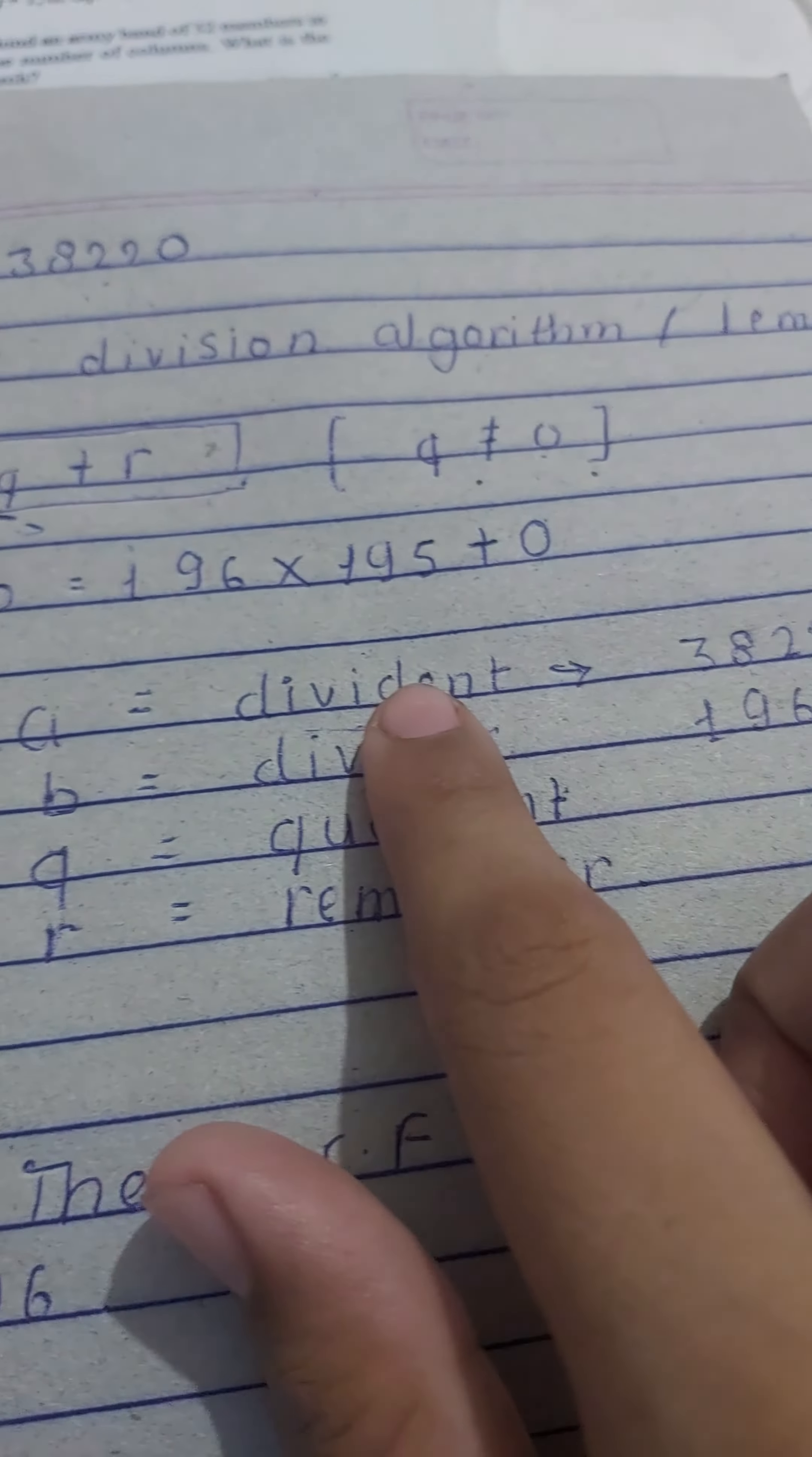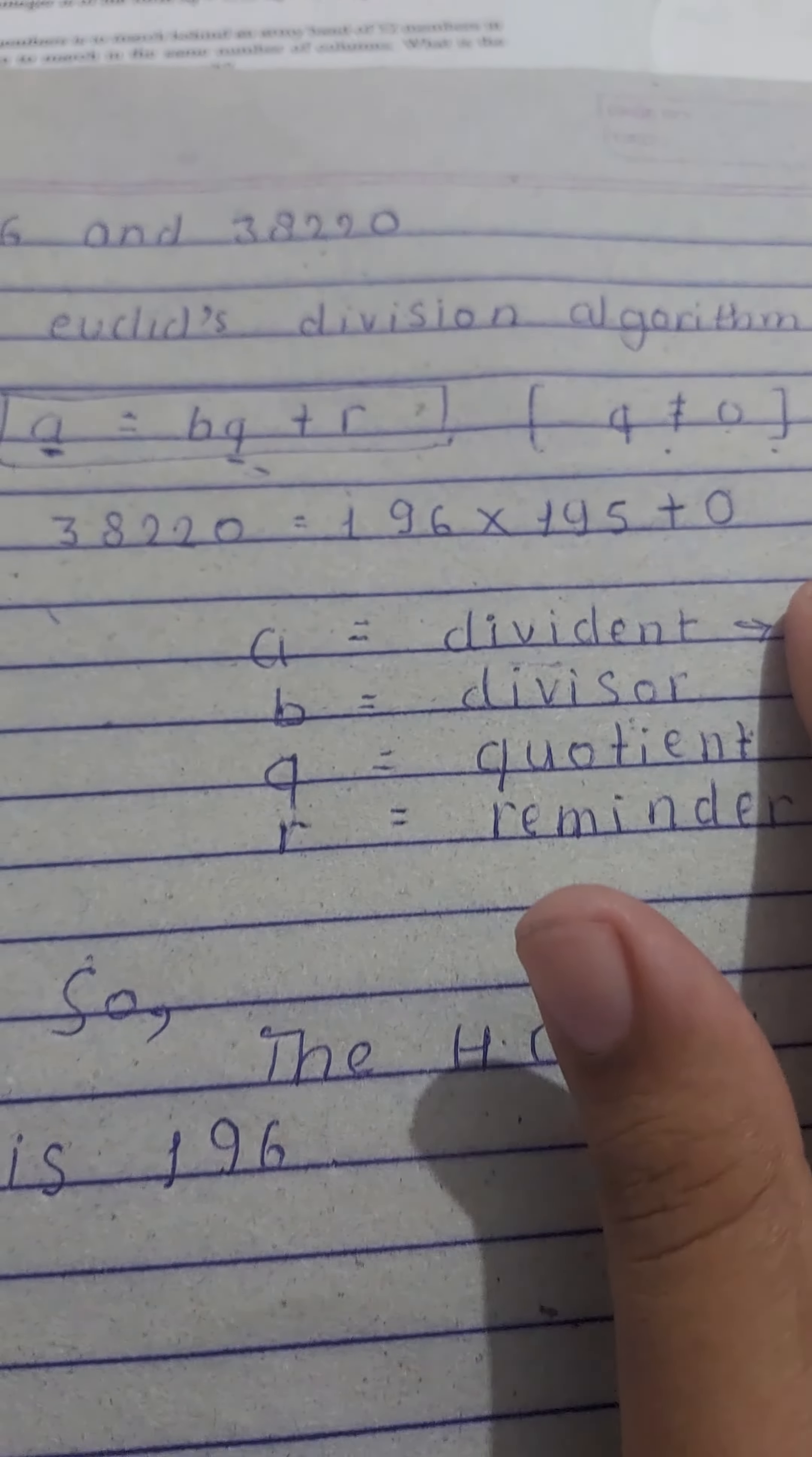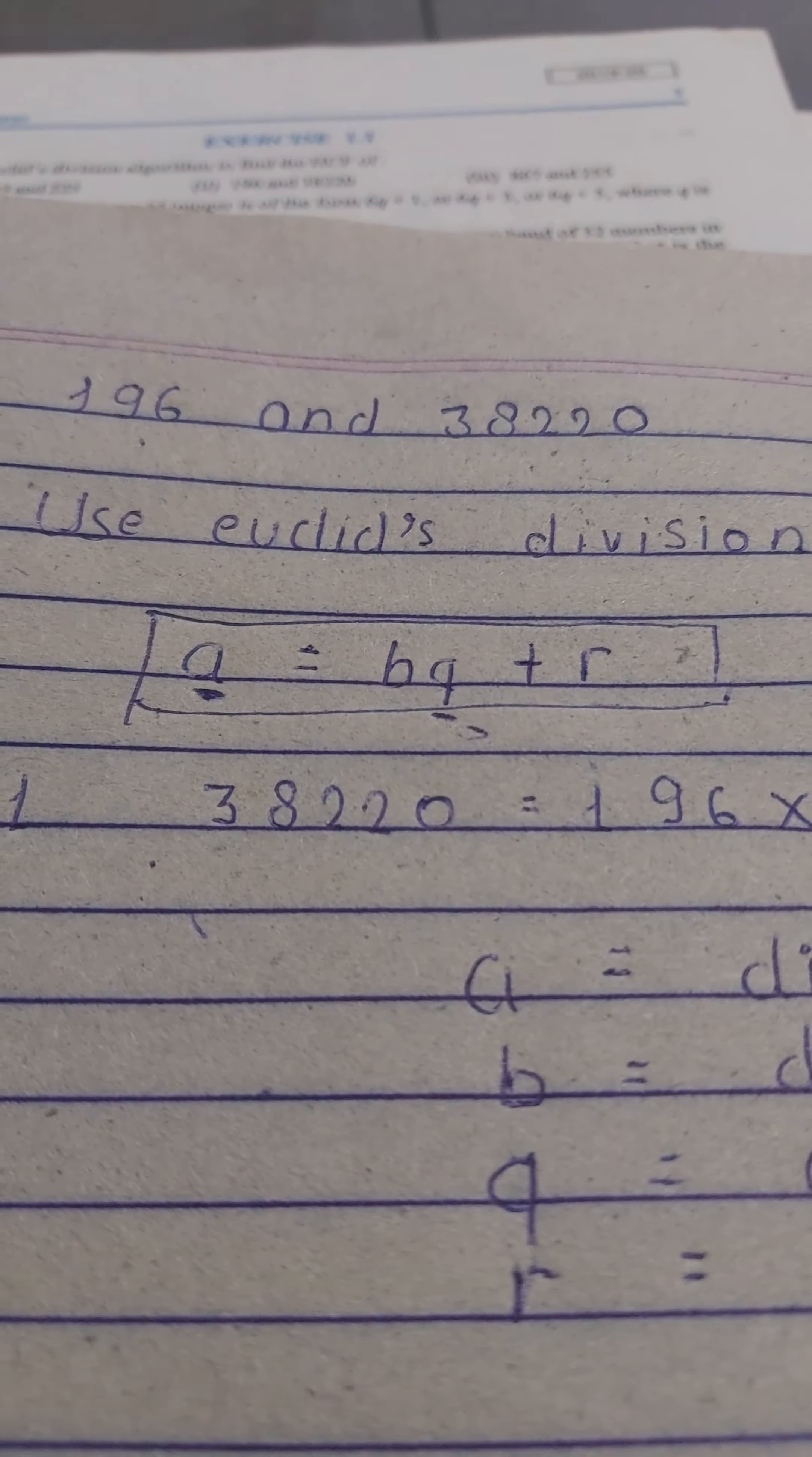And here we're given dividend 38220 and divisor 196. So the HCF of 196 and 38220 is 196. That's all for this video, friends.